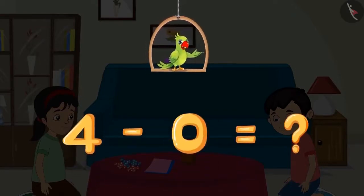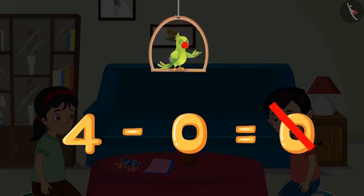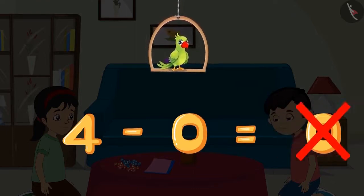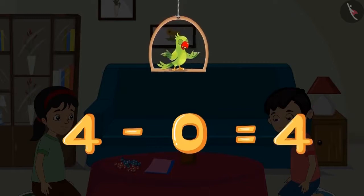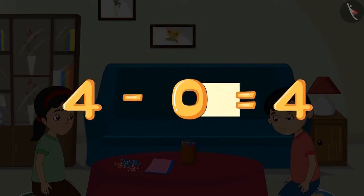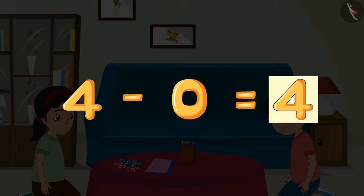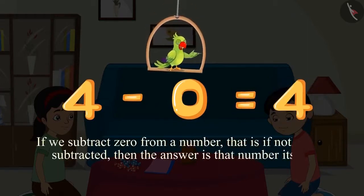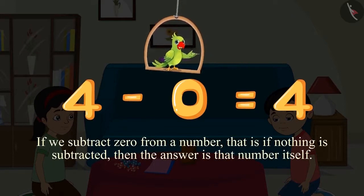We can also write this in this way. Can you tell me the answer? Do you think the answer will be zero? No, the answer will be four. Very good. This means four minus zero equals four. If we subtract zero from a number — that is, if nothing is subtracted — then the answer is that number itself.